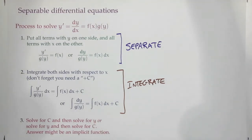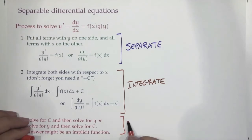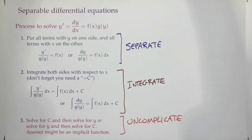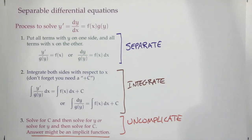So you separate, you integrate, and then the last step — I like to call this 'uncomplicate,' which is a very complicated word. After you've integrated, you've essentially solved. There might be things you want to do: you might want to solve for your constant C if you have initial conditions, you might want to solve for y. Or you might not be able to — the answer might be an implicit function, and that's perfectly fine.